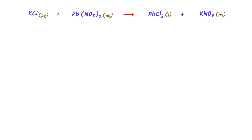The third step is to balance the chemical equation. As usual, we balance the large anions like nitrate first. At the left-hand side there are two nitrate ions, while at the right-hand side there is only one — I place a 2 there. Now at the right-hand side there are two potassium, while at the left-hand side there is only one — I place a 2 there as well. At the right-hand side there are two chlorine and one lead; at the left-hand side there are also two chlorine and one lead.